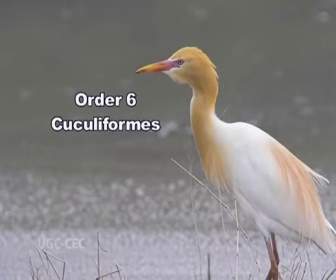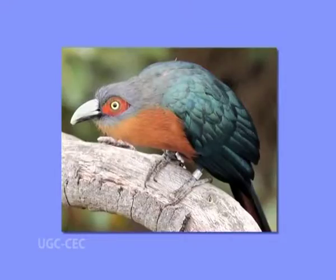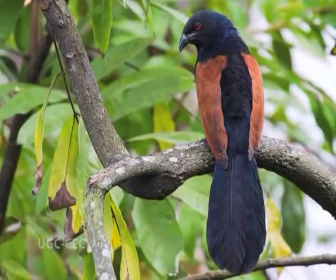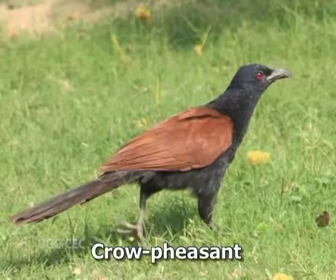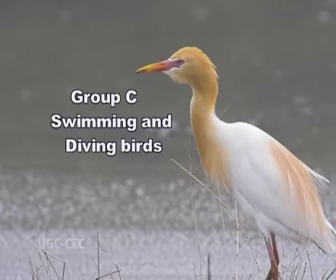Order 6, Cuculiformes. Toes two in front, two behind; hind toe is reversible. Feet not adapted for grasping. Tail long and beak moderate. Many cuckoos are parasitic — the female lays eggs in the nest of other birds, especially crows. Examples: cuckoo, quail-cuckoo, crow-pheasant.